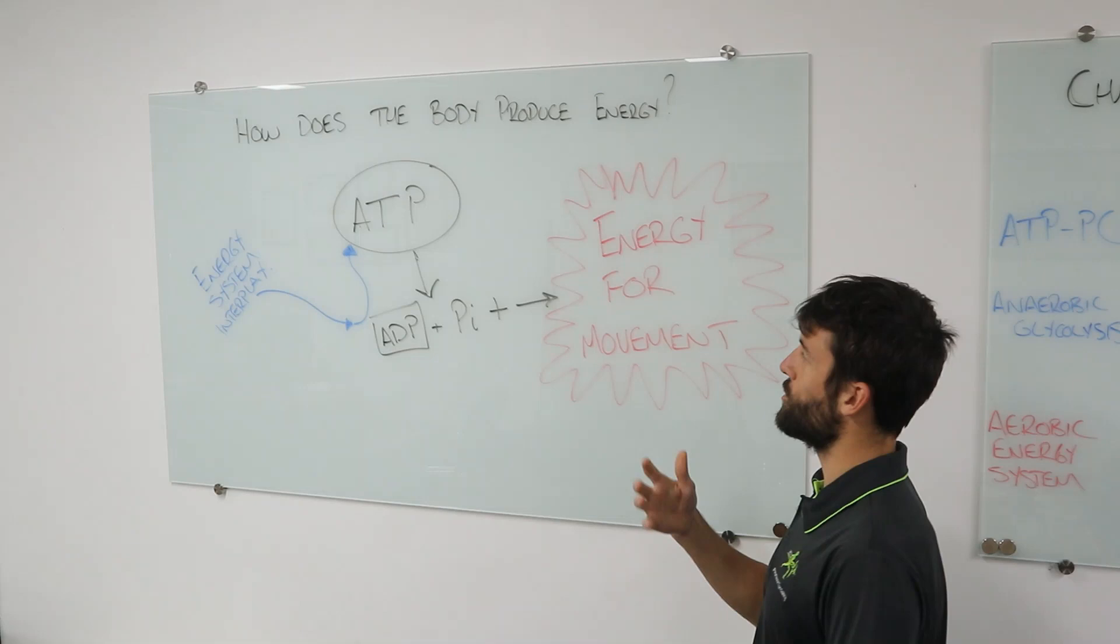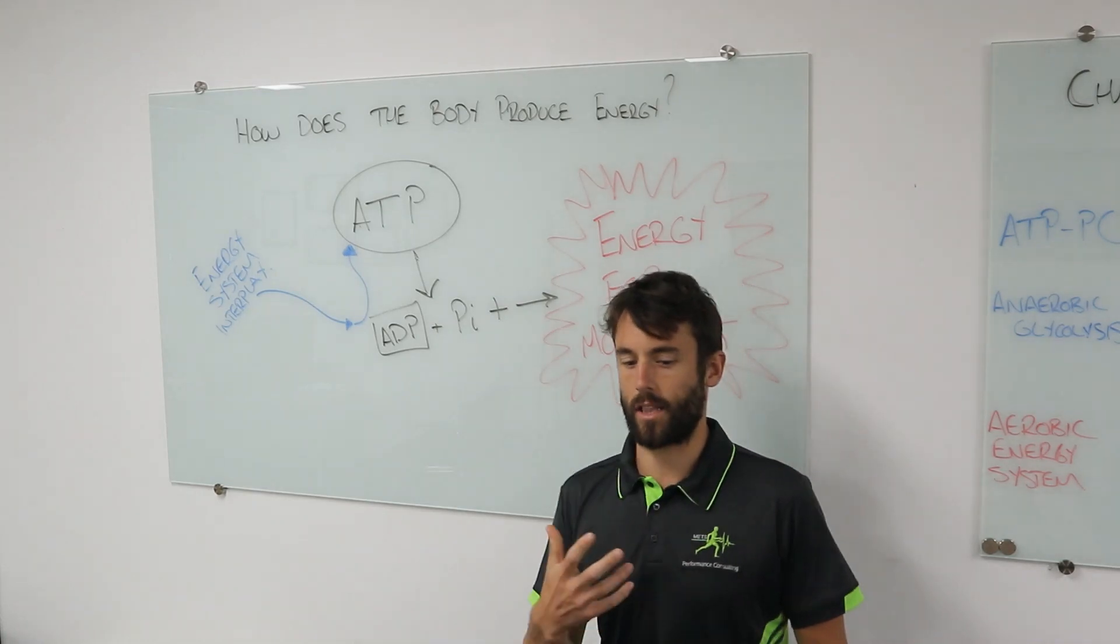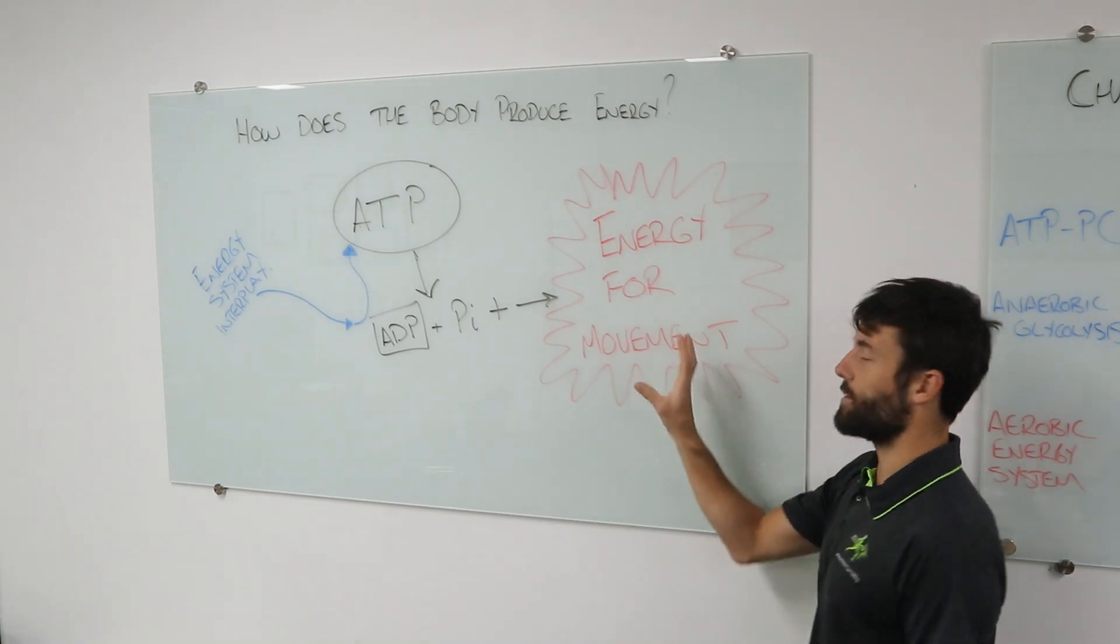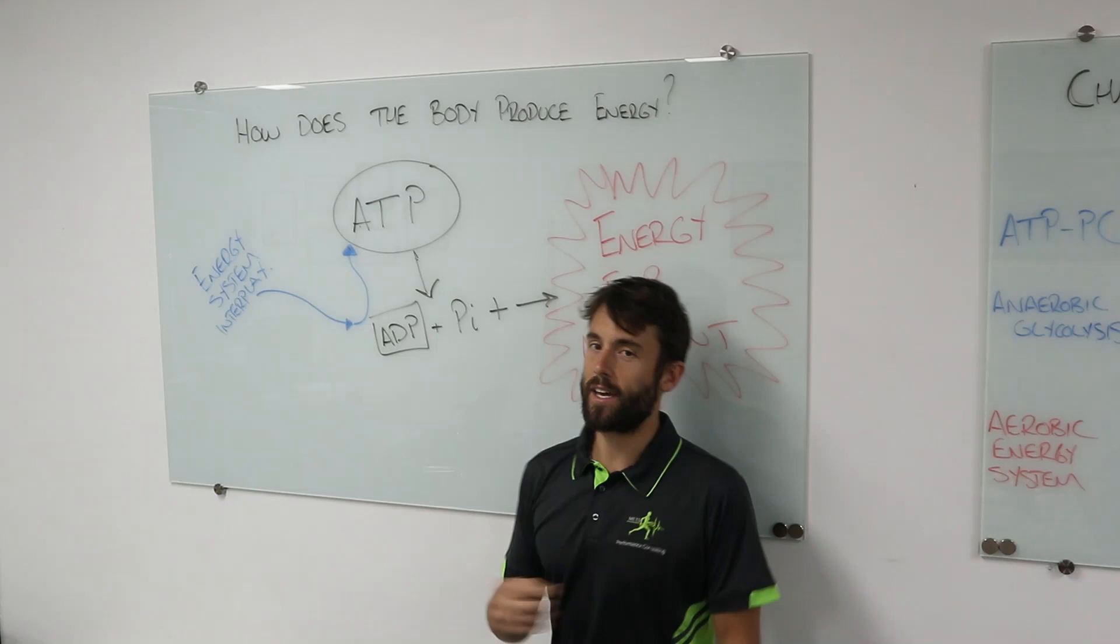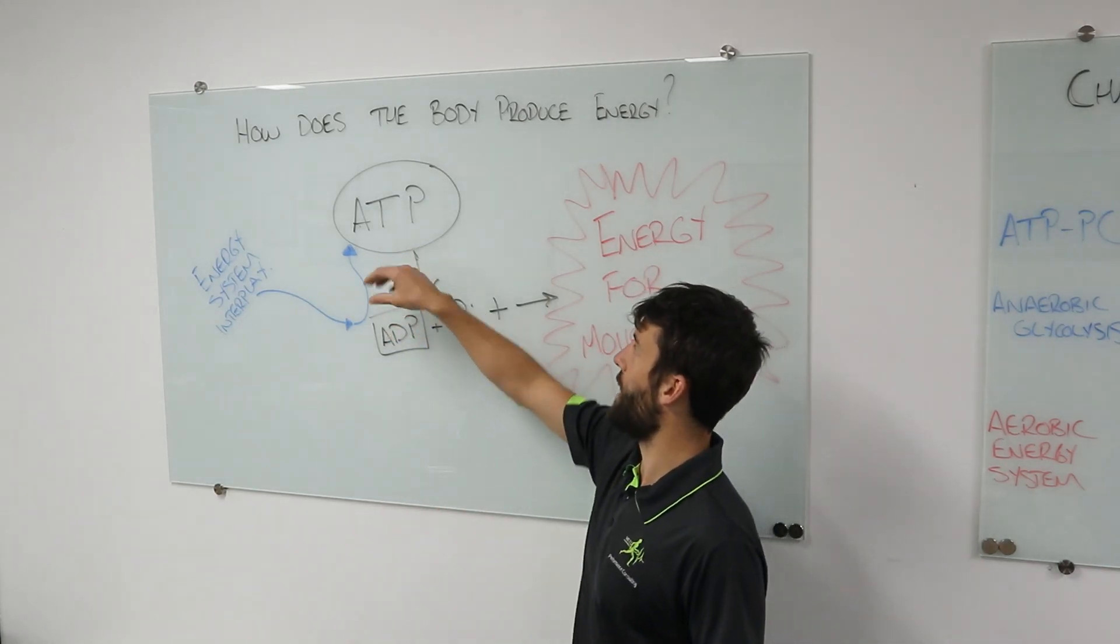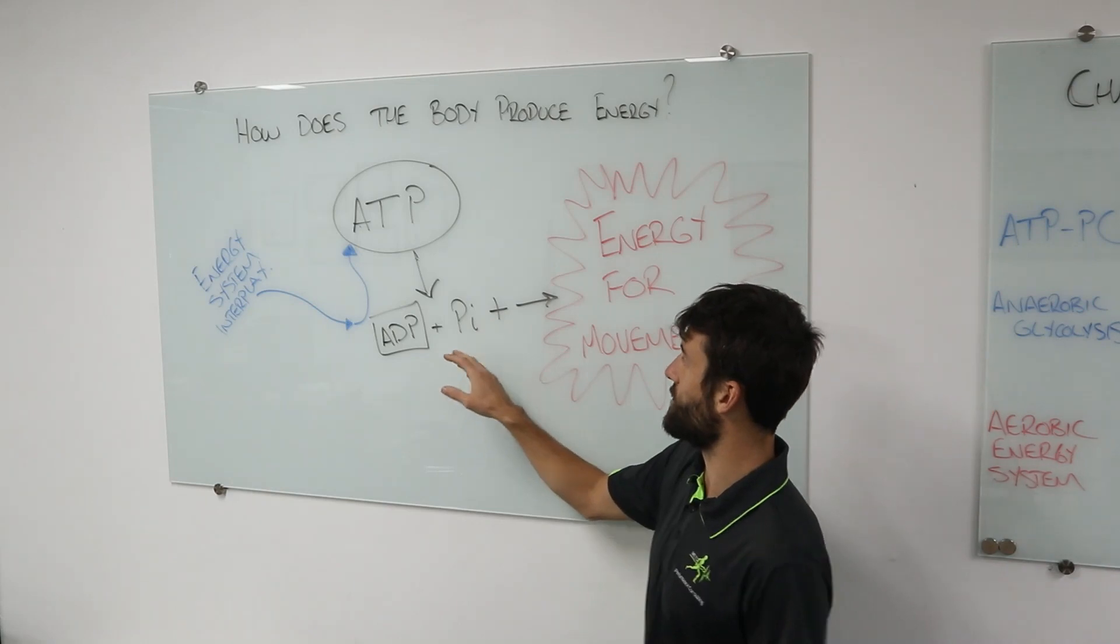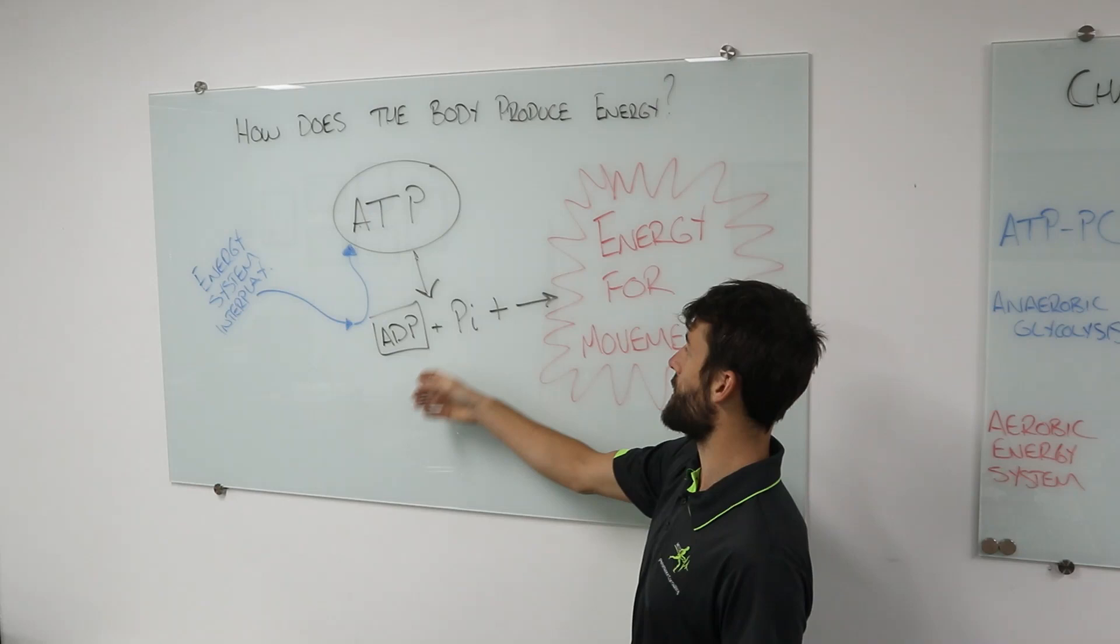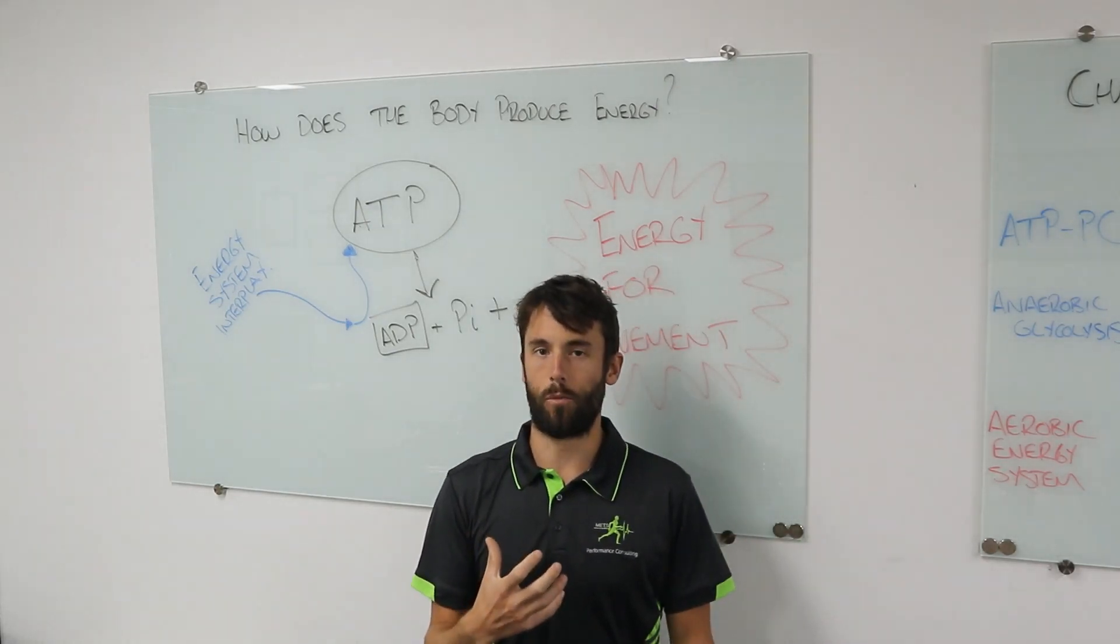Before we get into that, we're going to have a quick look at what we are actually getting from the energy systems and how they are actually allowing us to create energy for movement. Every muscle contraction that we have is due to an ATP, adenosine triphosphate, splitting apart. That adenosine triphosphate will split apart which will leave us with an adenosine diphosphate plus this phosphate molecule. When that happens, that releases energy which we can use for movement.